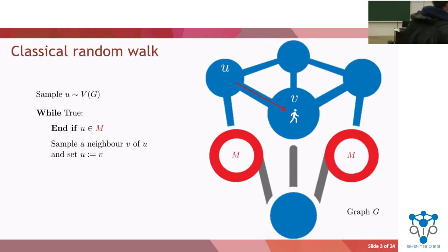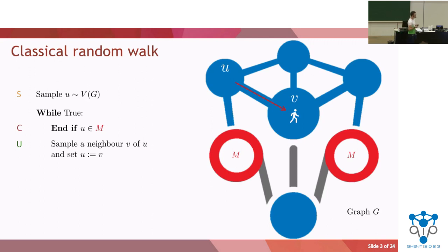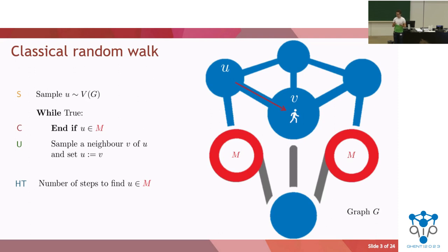At each point, the walker verifies: am I already in a marked subset? If not, it samples a neighbor of the current vertex and then transitions towards that neighbor. To analyze the complexity of such an algorithm, we need the cost of setting up the walk, the cost of verifying whether we are in a marked vertex, and the cost of sampling a neighbor and transitioning. The remaining ingredient is the hitting time of the random walk — the expected number of steps the walker takes, starting from the stationary distribution, to end up in one of the marked vertices.